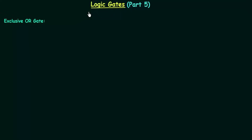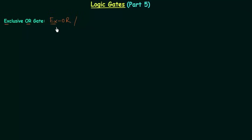In the last lecture we completed NAND and NOR gates. In this lecture we will complete the exclusive OR gate, also called XOR. The name comes from 'exclusive' and 'OR', shortened to XOR — 'EX' also sounds like the letter X, so we call it XOR.